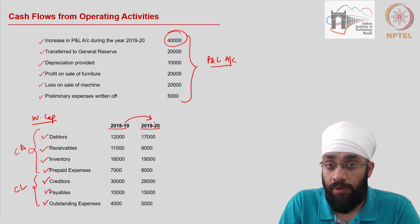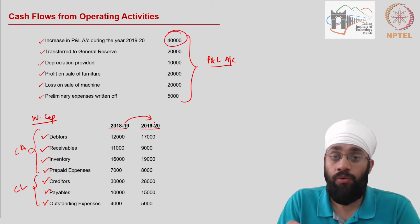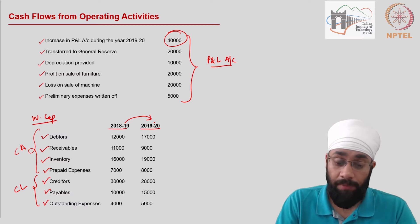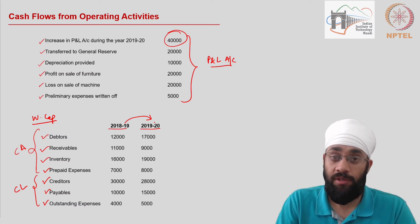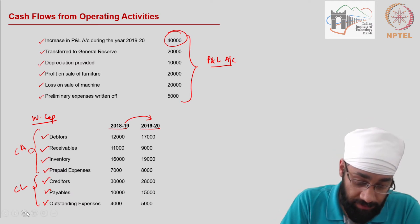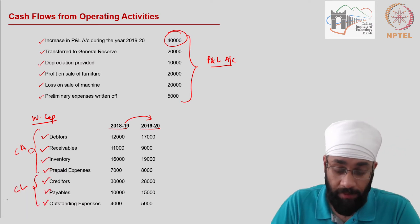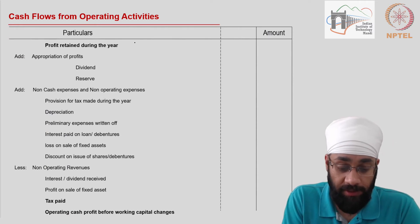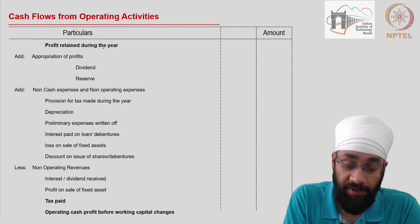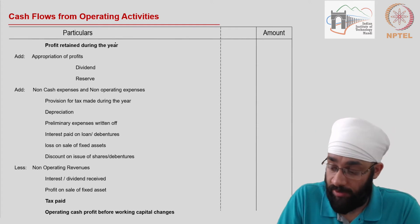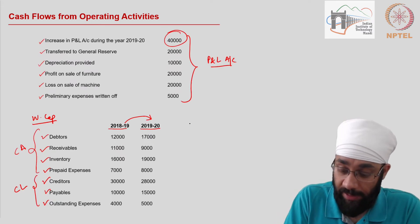You do not have an income statement or profit and loss account given to you, and you do not have a balance sheet. This is loose information provided to you. Can you prepare the cash flows resulting from the operating activities of the business? Let us attempt this problem. This is the format, and we begin with profit retained during the year — that is the increase in the profit and loss account in the balance sheet.